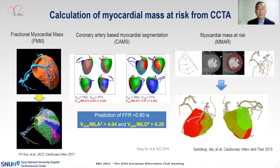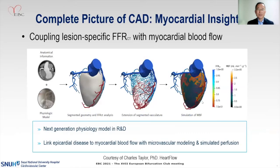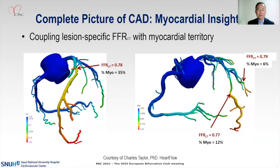While we are working in the cath lab, several CT specialists developed methods to calculate the myocardial mass at risk from CT scans, under the names of fractional myocardial mass, KEMS, and MR. These look promising but require a CT scan performed before the procedure. One very interesting method combines lesion-specific CT-FFR with microvascular modeling and simulated perfusion. Theoretically, you can calculate the CT-FFR, myocardial mass at risk, and myocardial blood flow. Previously, CT simulation could provide only CT-derived FFR values, but now it can also provide myocardial flow and myocardial territory — a one-in-one solution for whole assessment of coronary artery disease.